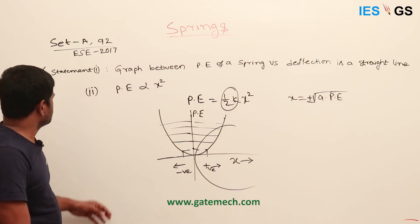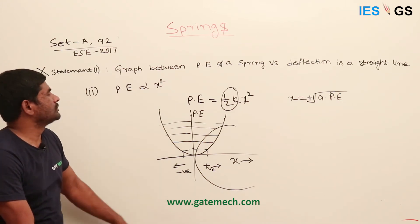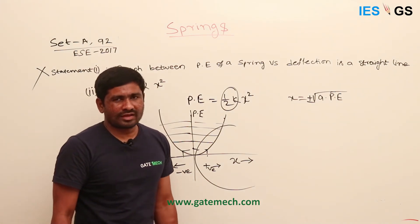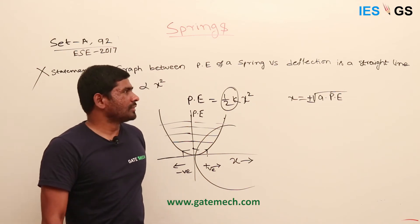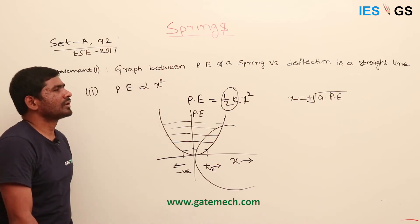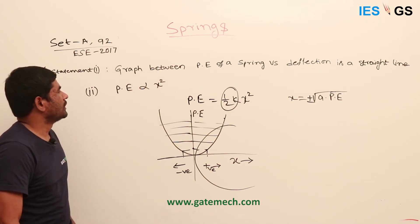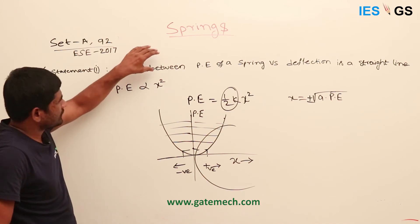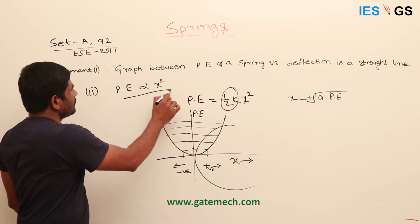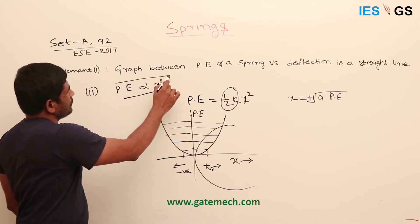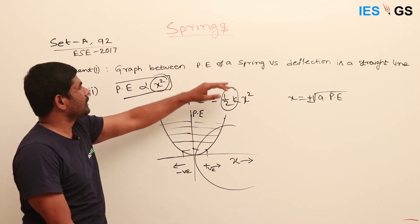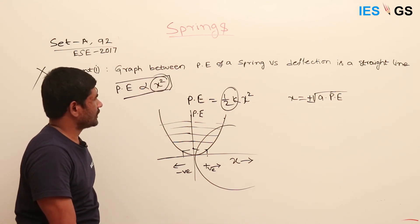Statement 2 says potential energy is proportional to X squared. Note that if one statement is wrong, you can often infer the other. If PE were proportional to X squared, then the PE vs deflection graph cannot be a straight line.